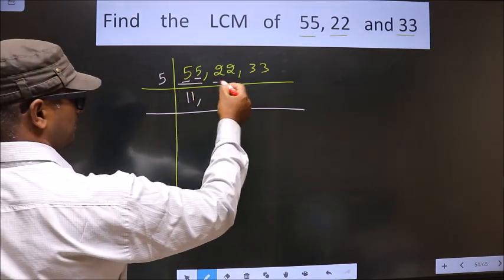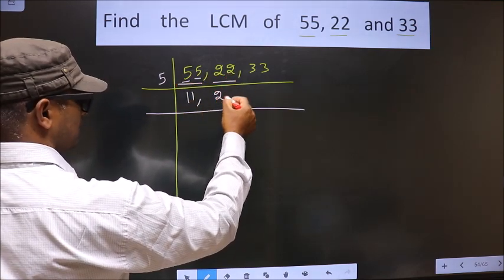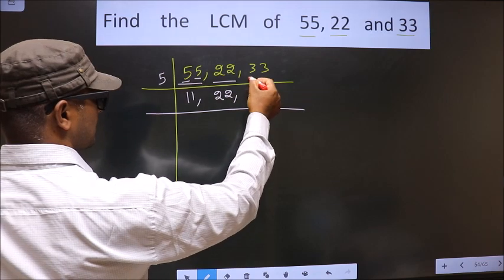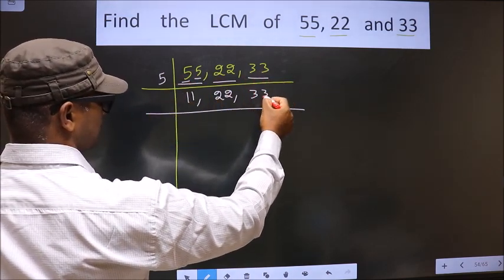Now the other number is 22. 22 is not divisible by 5, so you write down as it is. Next number is 33. 33 not divisible by 5, so you write down as it is.